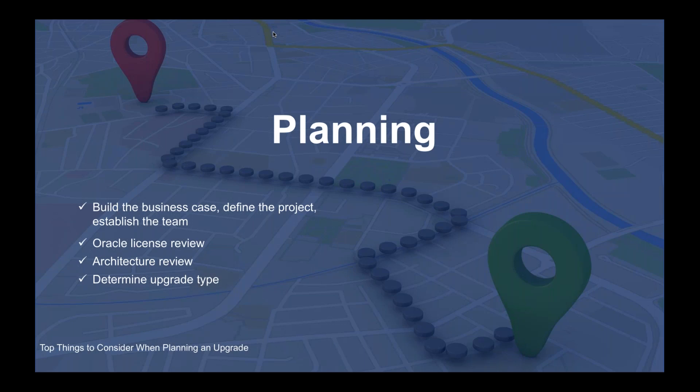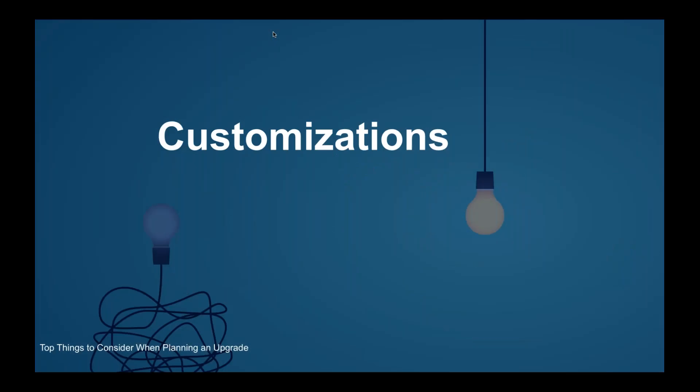Finally, you want to determine your upgrade type. Are you going to go with a like-for-like upgrade — take the features, functionality, and customizations built into your system today, move those into 9.2, and then position yourself on a continuous improvement roadmap where you leverage new features incrementally as they're released? Or do you take time to eliminate modifications or optimize processes?